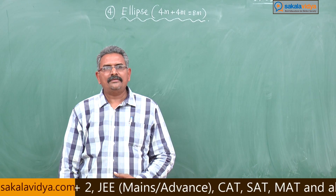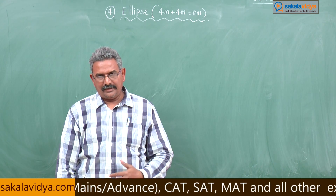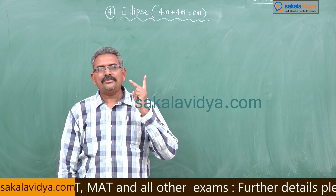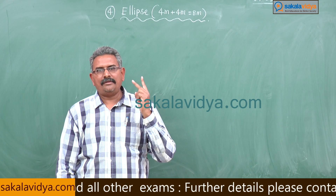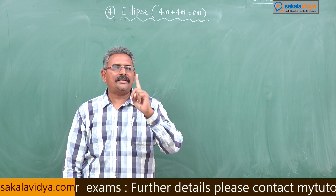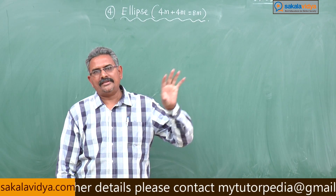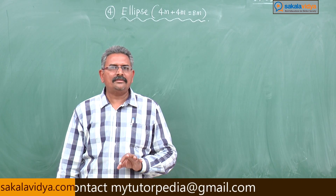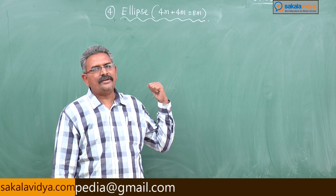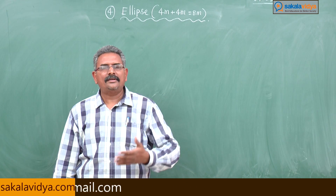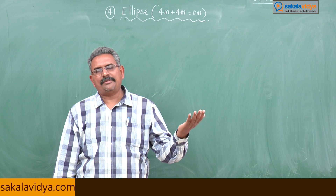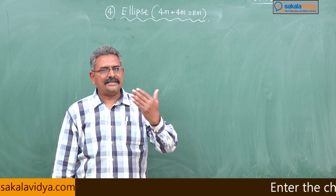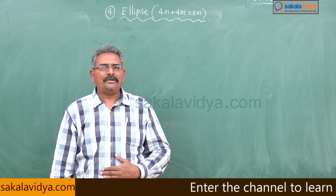In the 2B examination, out of 75 marks, 8 marks will appear from this chapter. Two short answer type questions will appear in the examination, each carrying 4 marks — that is a total of 8 marks. Very simple questions will appear; if you go through these videos and practice your previous year question papers, you will definitely solve the problems in the examination.